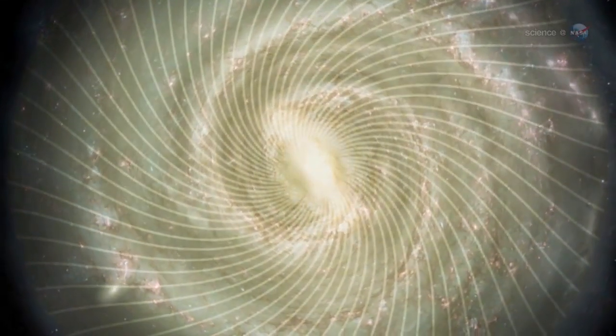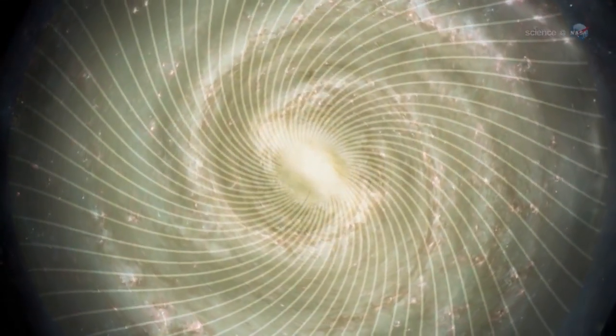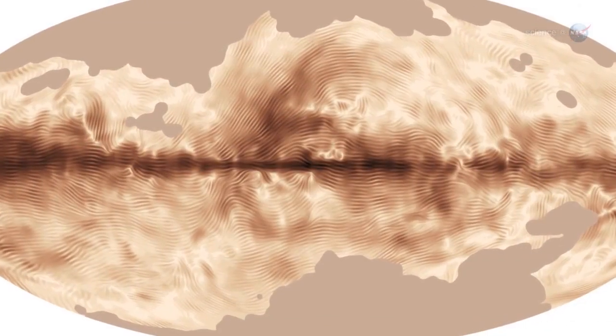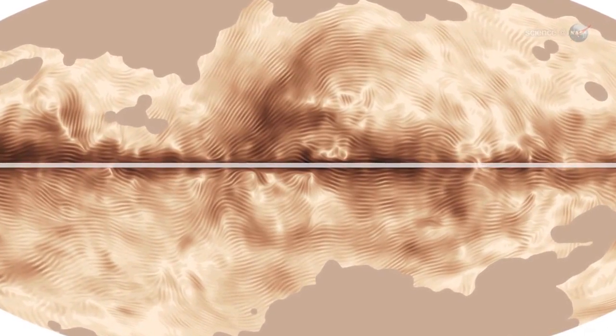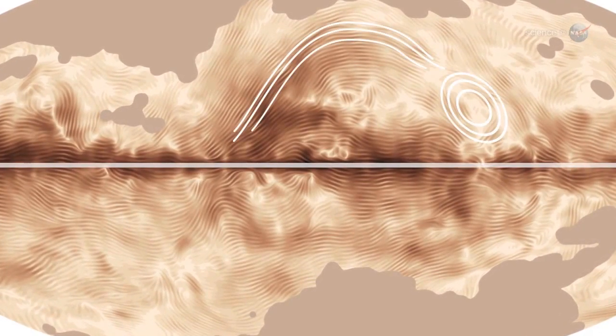If we could see our galaxy from the top down, she says, the magnetic field would have a spiral shape. Because Planck sees the Milky Way edge on, however, the spiral field appears to line up parallel to the galactic plane. There are also many graceful arches and loops that trace the shells of nearby supernova explosions.